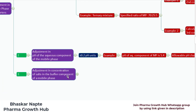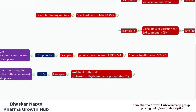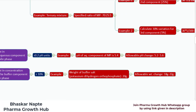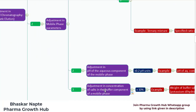The next point is adjustment in concentration of salts in the buffer component of a mobile phase. You can make an adjustment of plus or minus 10%. For example, if you have a buffer consisting of potassium dihydrogen orthophosphate and the weight of the salt is 20 grams, calculate 10% of 20 grams, which is 2 grams. So plus or minus 2 grams is the allowable variation, making it 18 grams to 22 grams. These are the important points when it comes to adjustment in mobile phase parameters.